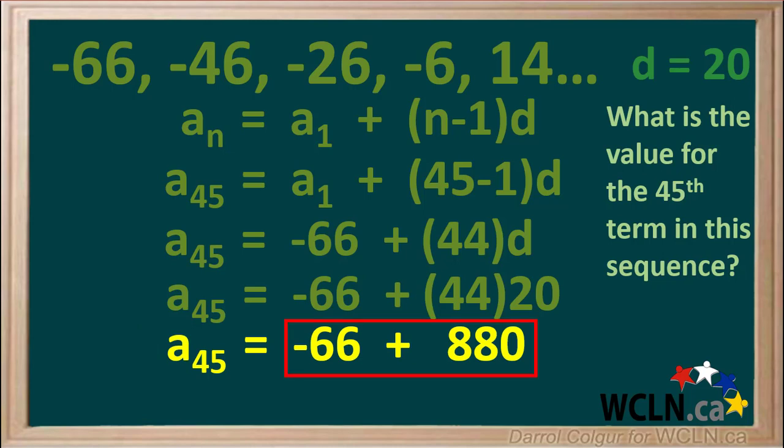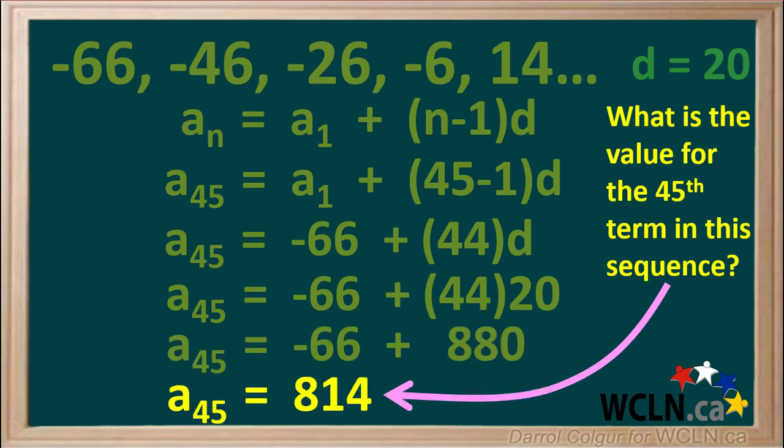Negative 66 plus 880 is the same as 880 minus 66, which equals 814. So the final answer is the value for the 45th term in this sequence is equal to 814.